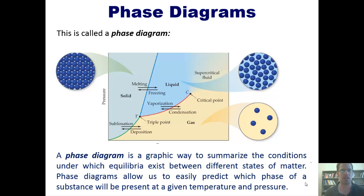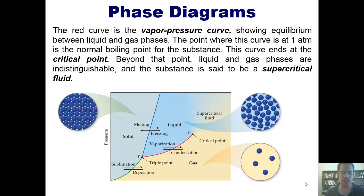Phase diagrams allow us to easily predict what phase a substance will be at a given temperature and pressure. The red curve is called the vapor pressure curve right here, and it shows the equilibrium between liquid and gas phases. You can see this deeper blue is liquid and this yellowish color represents the gas phase.